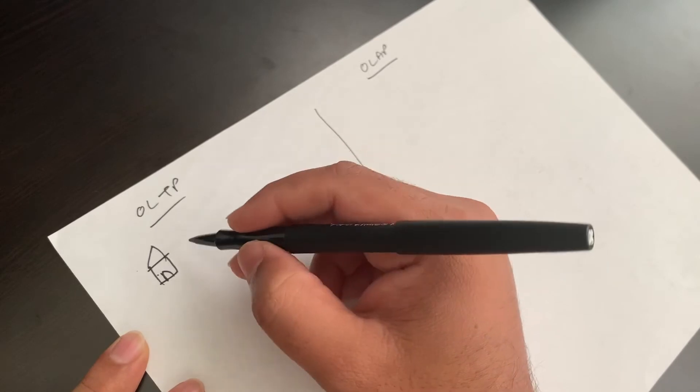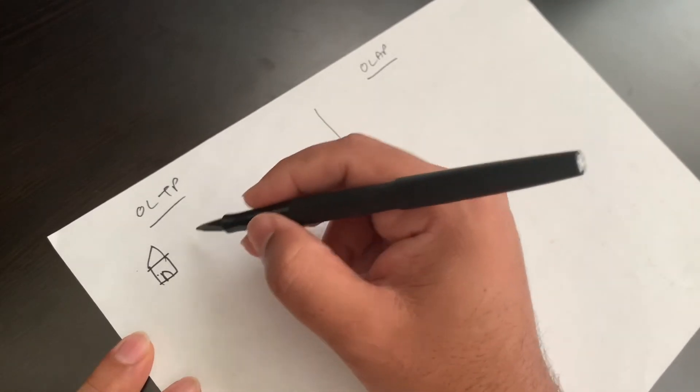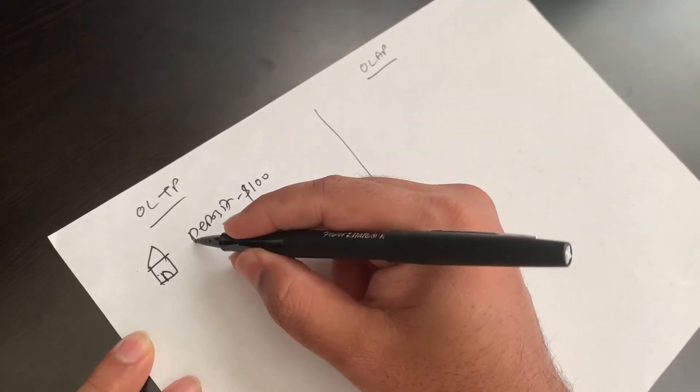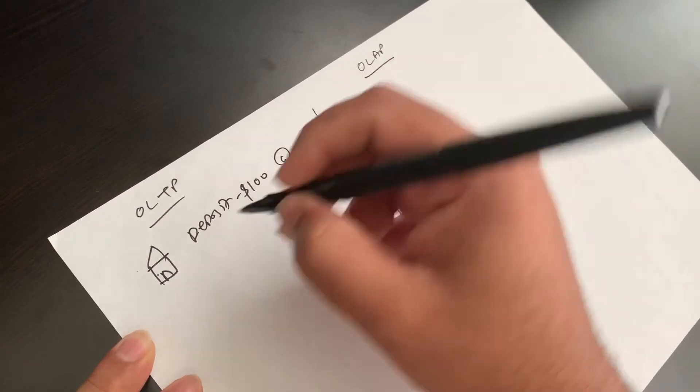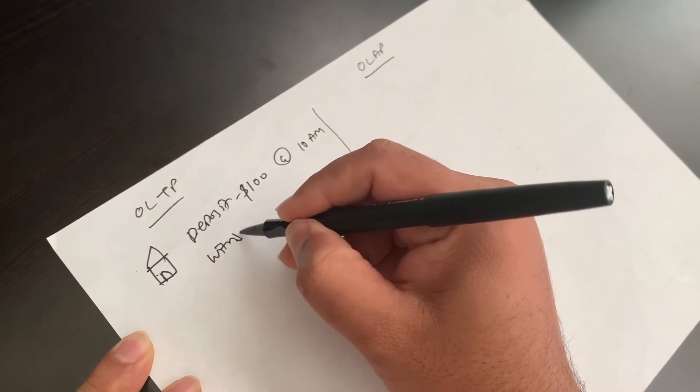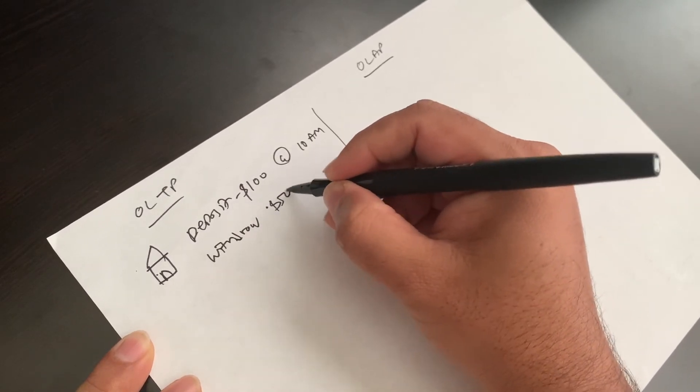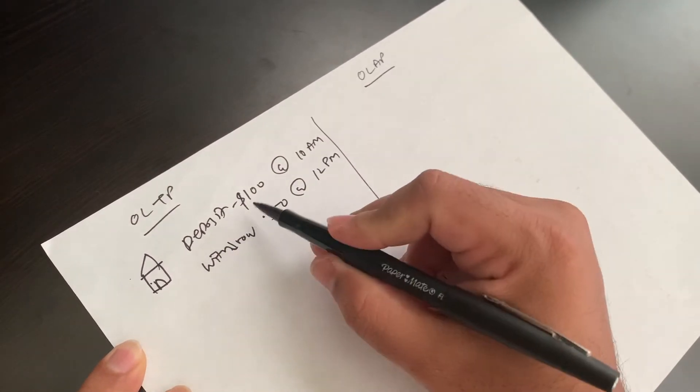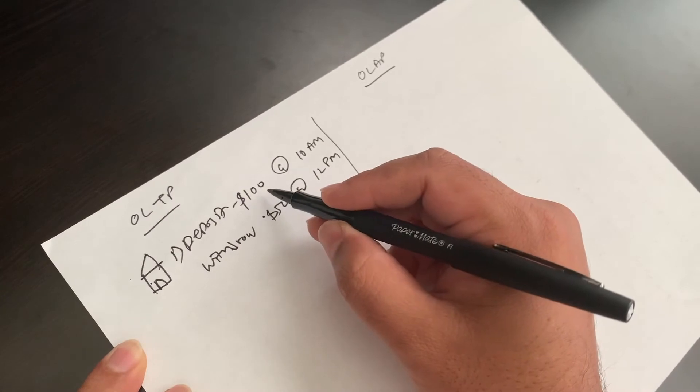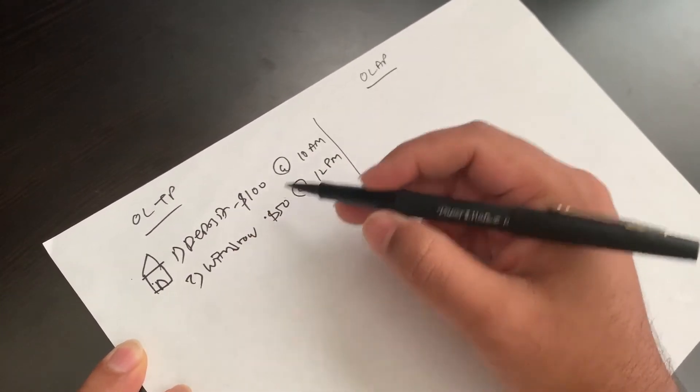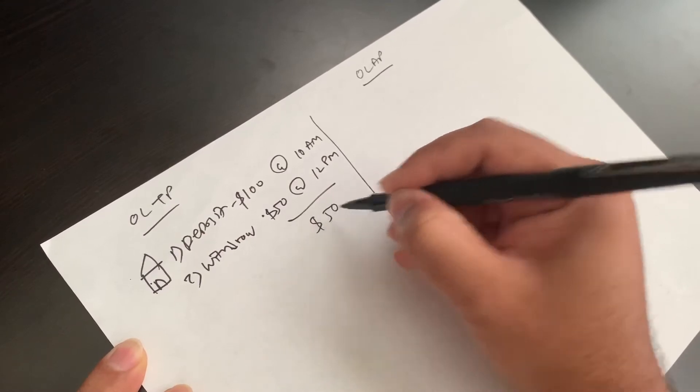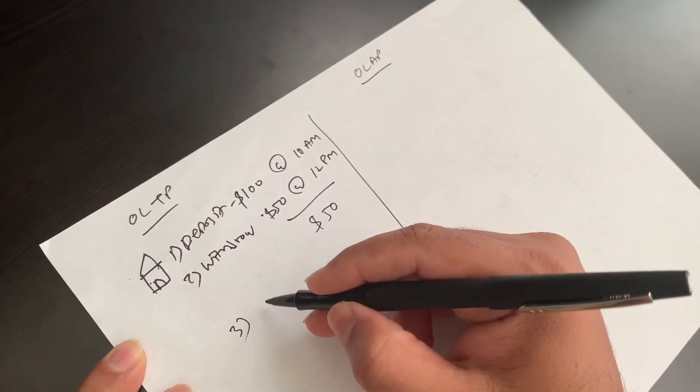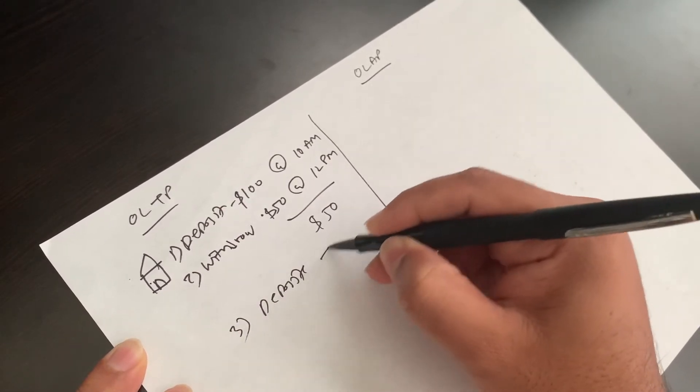When you go to any bank branch, let's say you deposit $100 at 10 a.m. and you withdraw $50 at 12 p.m. So the first entry is deposit $100 at 10 a.m. Second entry, you withdraw $50. So now your balance is $50.